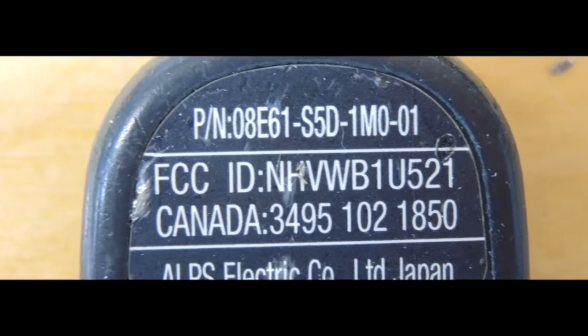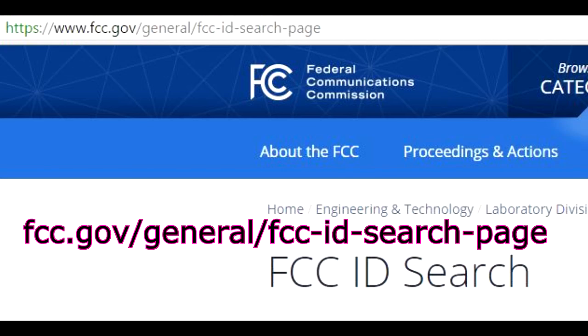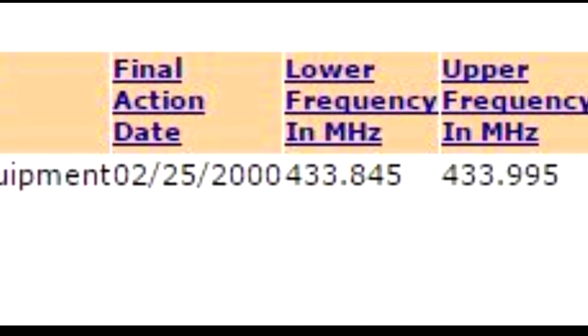If you flip it over, you'll see an FCC ID that's required by law for anything which is an intentional radiator and sold in the States, which is very helpful. You can go onto this FCC website, and it'll tell you who made it, and more importantly, the frequency it operates, 433.995 MHz, and it comes from Koku Alps, which makes tremendous sense because that's a long-term vendor for Honda.